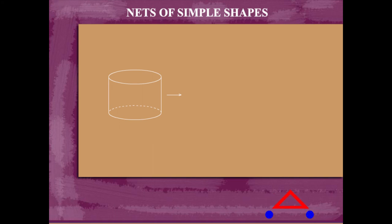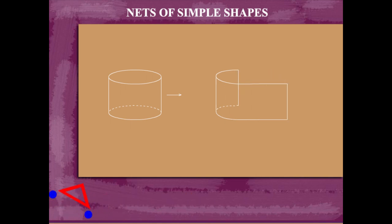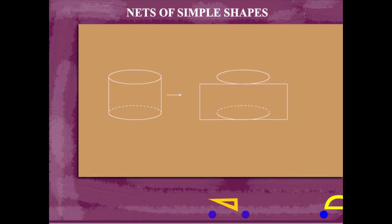And now, this is a 3D cylindrical block. Let's see it unfold. It's made of a rectangular piece and 2 circular pieces.